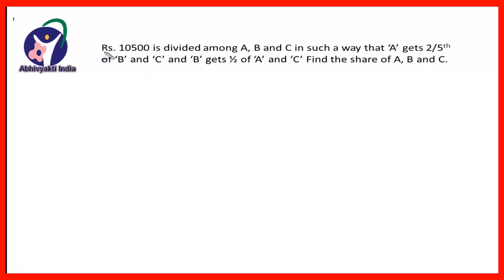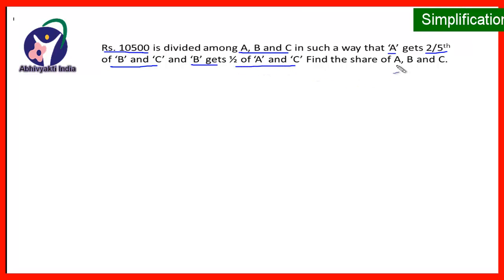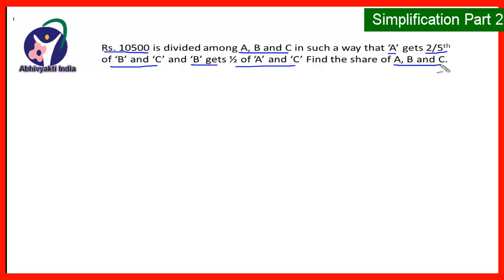The next question is: Rs.10,500 is divided among a, b and c in such a way that a gets 2/5 of b and c, and b gets half of a and c. Find the shares of a, b and c.